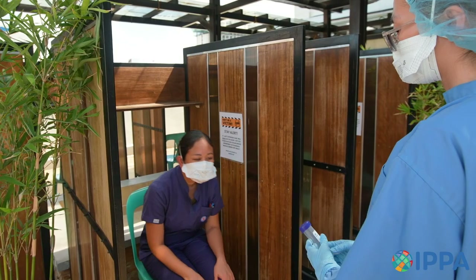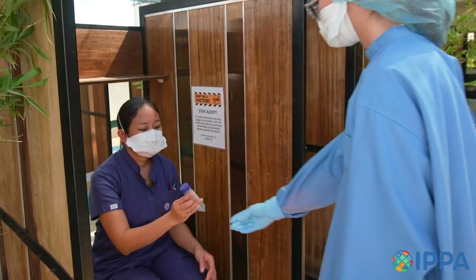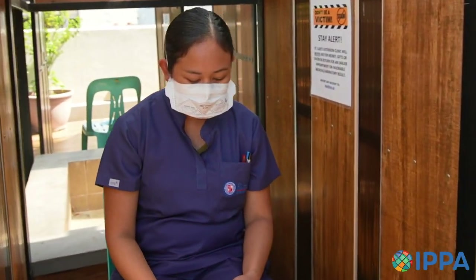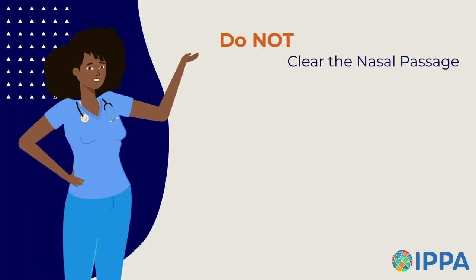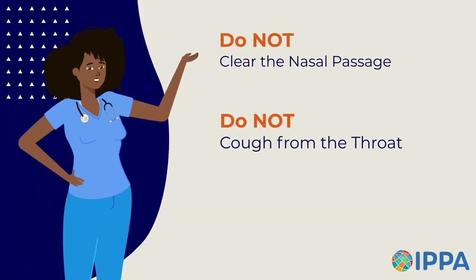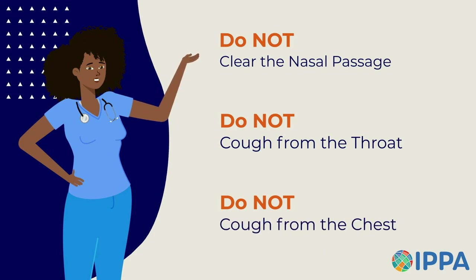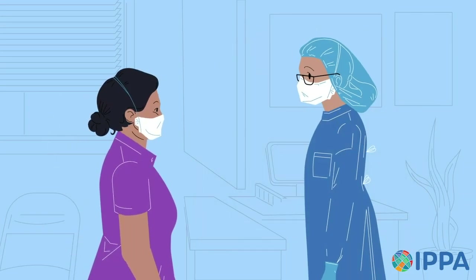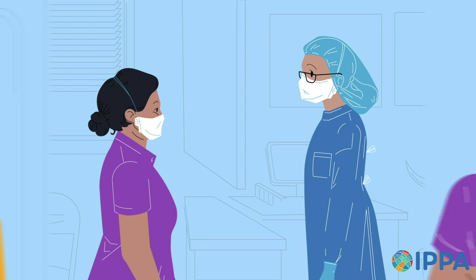The technician will hand the applicant the specimen container and give instructions for proper collection. The technician may start with what not to do, such as: do not clear the nasal passage, do not cough from the throat, do not cough from the chest. Then the technician will communicate the following steps to more effectively collect a sputum specimen.